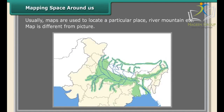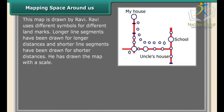Usually maps are used to locate a particular place such as a river or mountain. A map is different from a picture. This map drawn by Radha shows the route from her house to her uncle's house. However, it is very difficult to find which place is near Radha's house because there is no scale or distance information. Ravi's map uses different symbols for different landmarks.